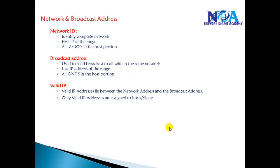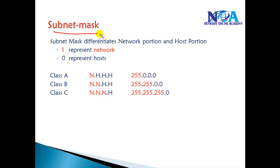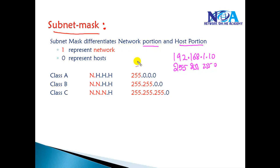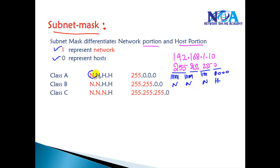Next we'll talk about subnet mask. Subnet mask differentiates the network portion from the host portion. Every time you assign an IP address — for example 192.168.1.10 — you must also provide the subnet mask, typically in the format 255.255.255.0. The subnet mask indicates: wherever there is a 1, that is the network portion; wherever there is a 0, that is the host portion. So 255.255.255.0 in binary is all ones for three octets and all zeros for one, meaning three network octets and one host octet.